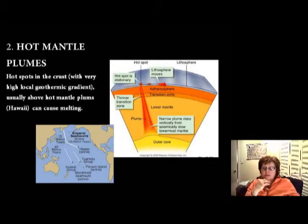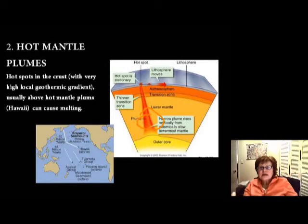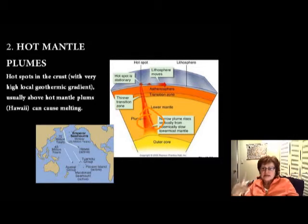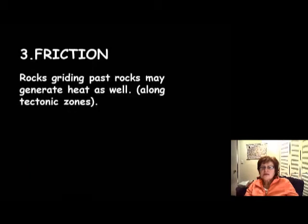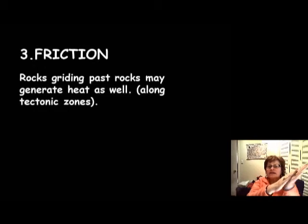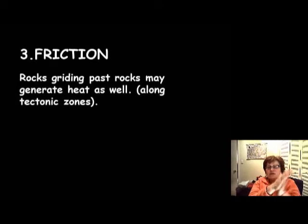The next cause is hot mantle plumes. There are places in the mantle where we have more radioactive elements than others, so these areas become hot spots, magma forms, and because it's less dense, it goes up to the surface — creating a heat source and a source of magma formation. The next one is friction: any time you have rocks grinding past each other, it will generate heat, which can cause melting, especially along tectonic zones.